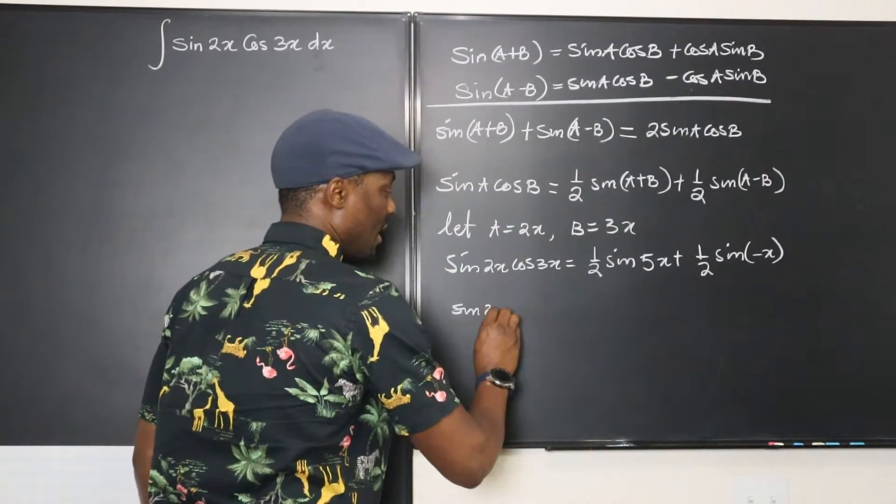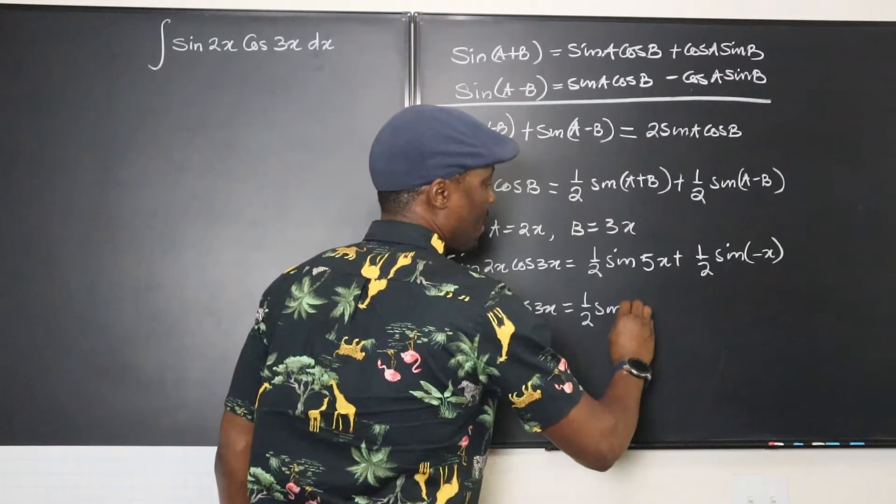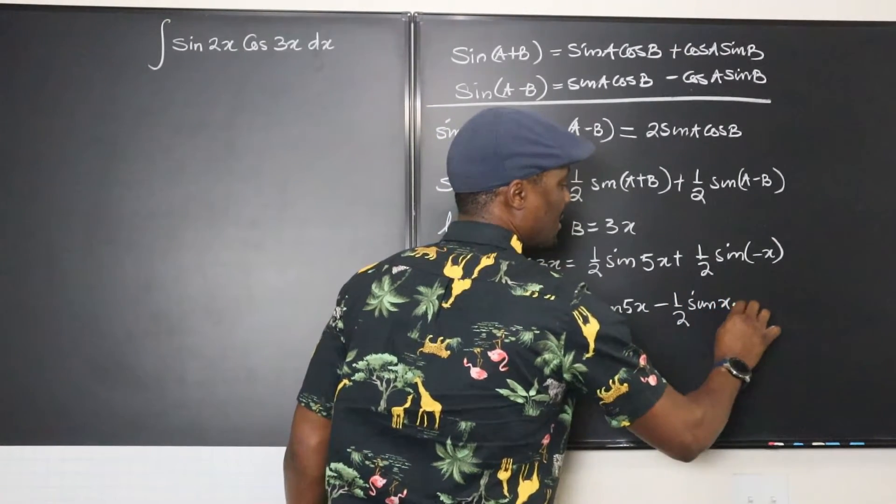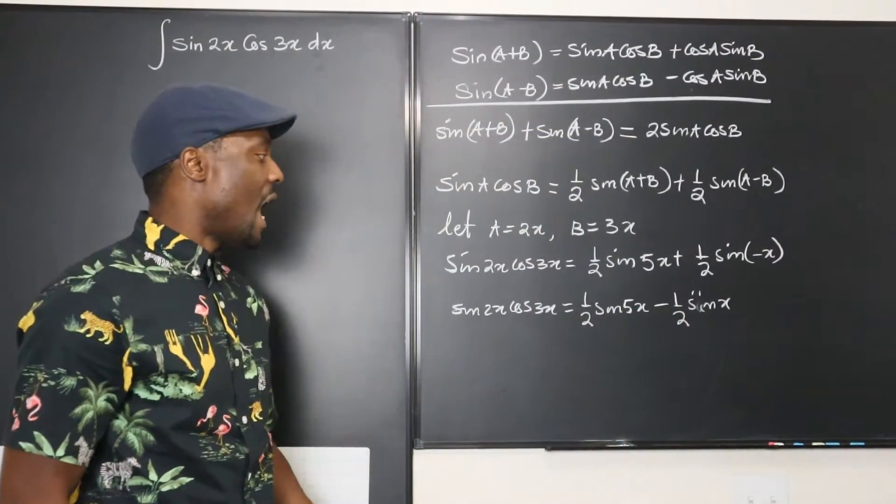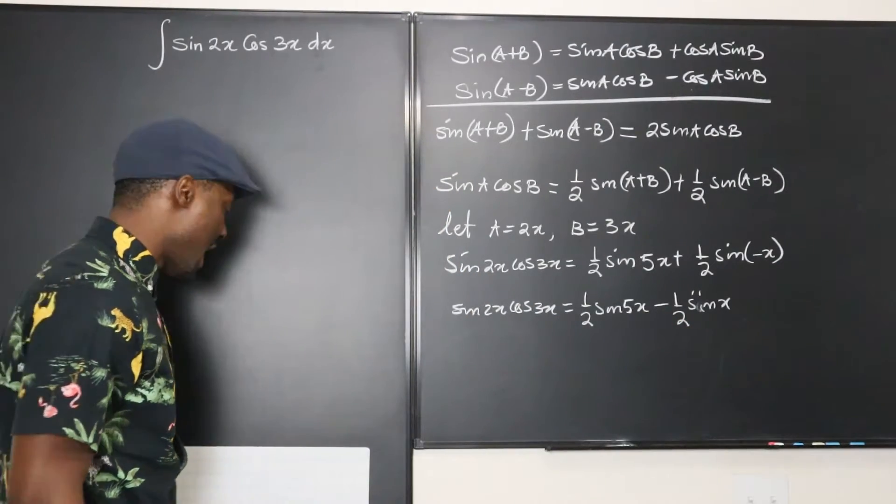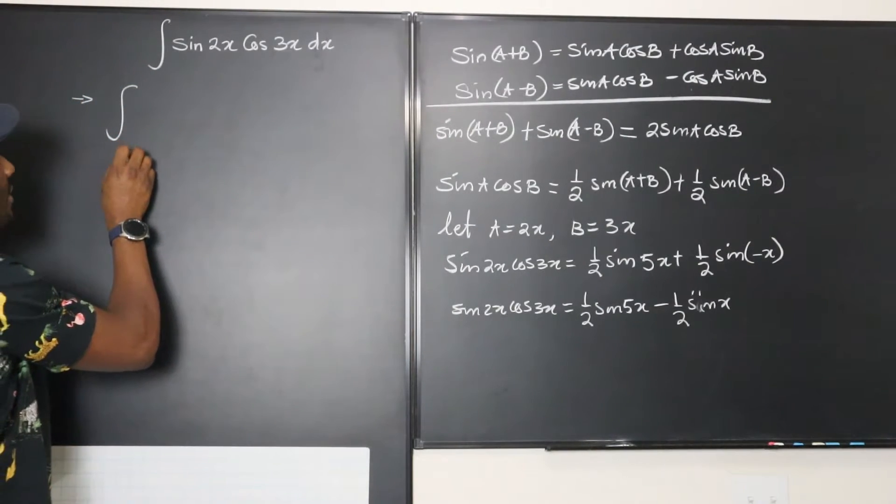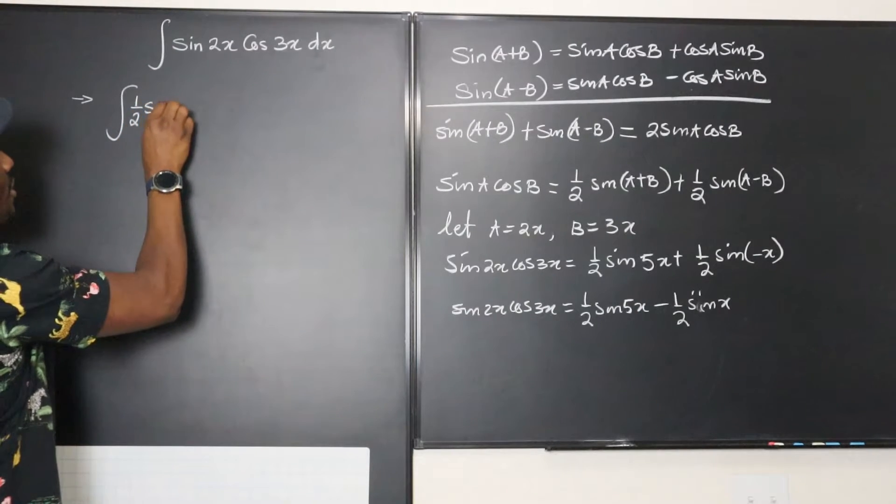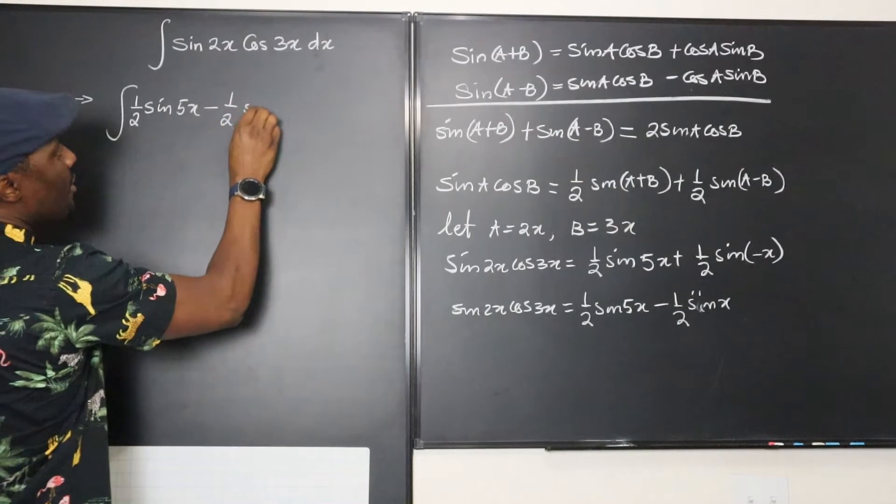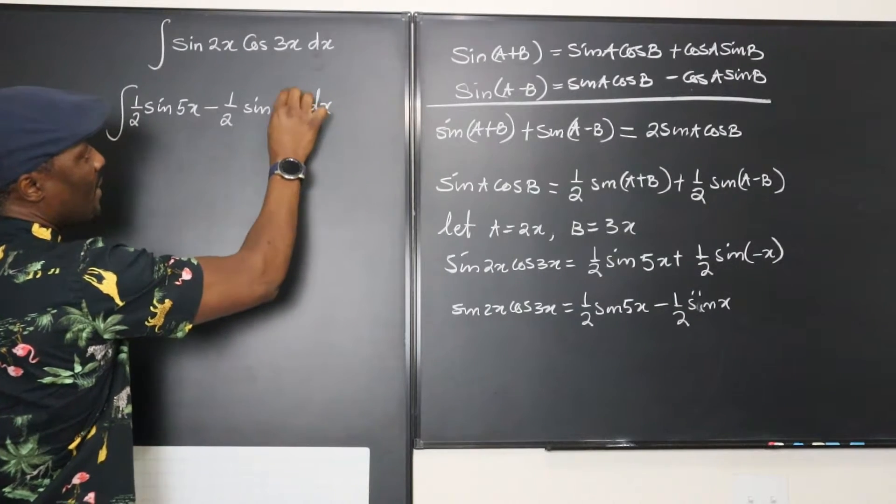So let's rewrite this. It's going to be sine 2x cosine 3x will be equal to one half of sine 5x minus one half of sine x. So that's it. Now we need to, instead of writing this now, we need to transfer this to the side and see what happens. This is going to be the integral of one half of sine 5x minus one half of sine x dx.